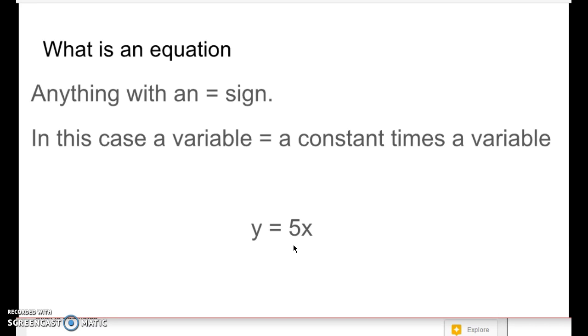The letters might change. t equals pn or t equals 5 times n. So those might change. But as long as you have a number in there and you have a letter equals a number times another letter, that's the equation we want.